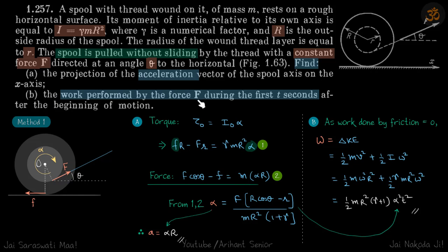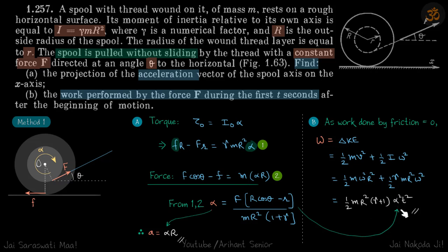For work performed by force F during the first T seconds: this is a case of pure rolling, so work done by friction is zero because the contact point is always at rest. All work done equals the change in kinetic energy: one-half m·v² plus one-half I·omega². Since v equals omega·R and omega equals alpha·t, we substitute to get the answer.